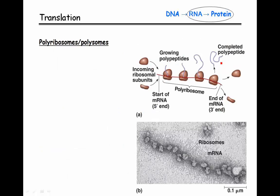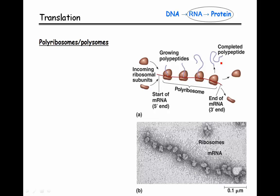Many times mRNA molecules get translated by many ribosomes all at the same time — simultaneously. This is what we call polyribosomes or polysomes. The bottom image shows an electron microscope picture of this. We can see ribosomes — the circular structures that look like beads — all lined up because they are all attached to the same linear piece of mRNA. Once the mRNA leaves the nucleus and enters the cytoplasm, the small subunit of the ribosome finds the start codon, attaches, then the large subunit attaches, and we get that initiation complex reading down the mRNA making polypeptide.